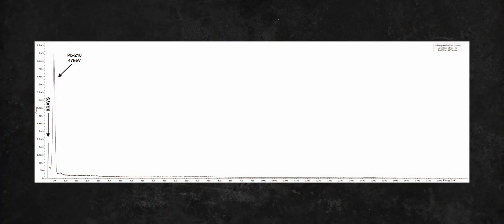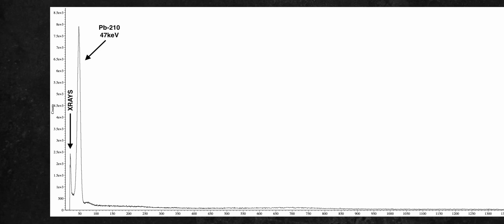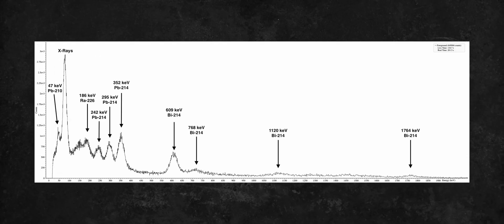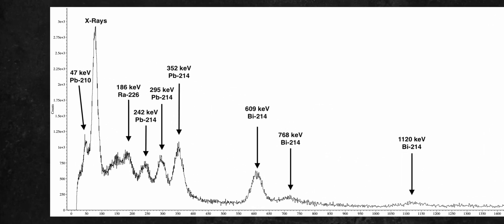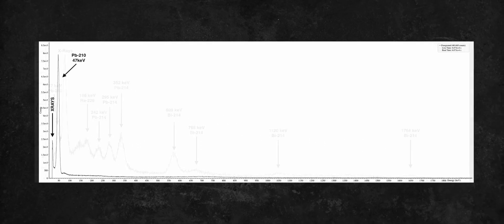A gamma spectroscopy of my lead-210 revealed a clear peak at 47 keV, with a smaller x-ray peak to the left. The peak at 47 keV can also be seen in gamma spectra of uranium and radium, which makes it pretty interesting to see how the peaks from the parent isotopes start to disappear as we go lower in the decay chain.